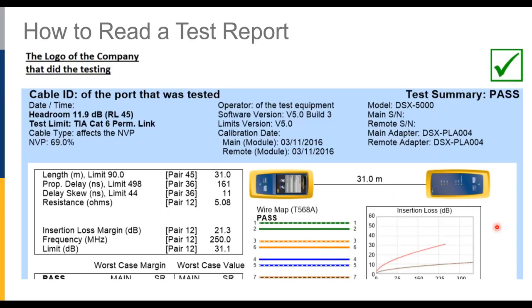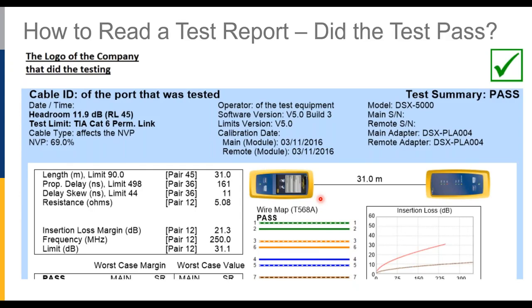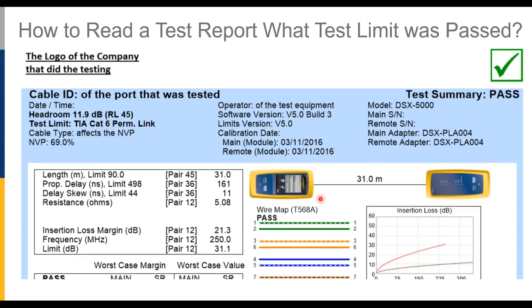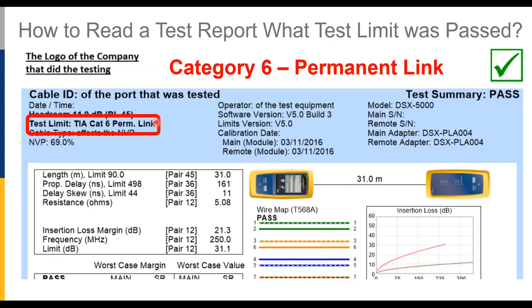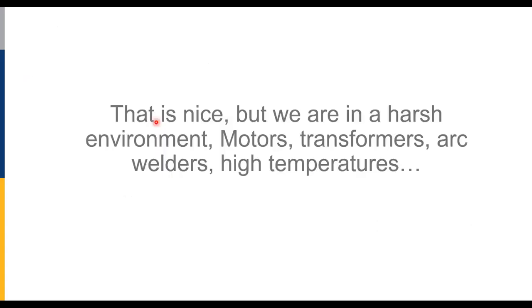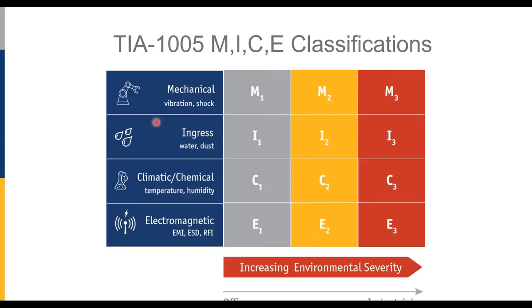If there's nothing else you remember from today's presentation, the test result is the proof — the warranty — that cabling was properly installed. Two critical fields to read on a test report: did it pass, and what limit did it pass against? If you were paying for Category 6A cabling but the report shows it was tested against Category 6 limits, it hasn't passed Category 6A. You might want to ask about that.